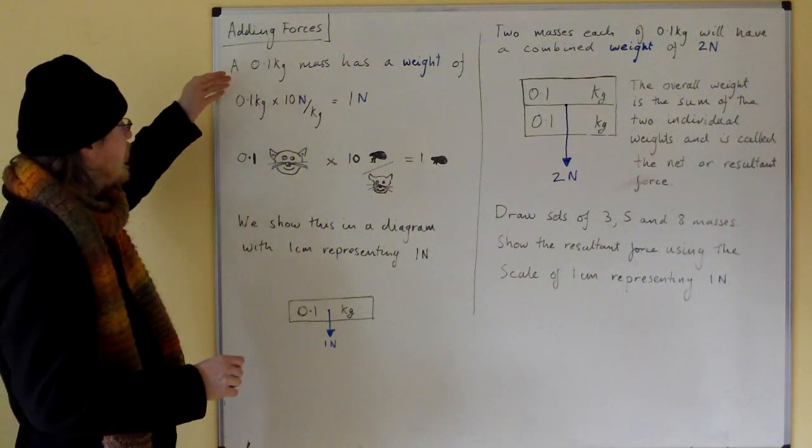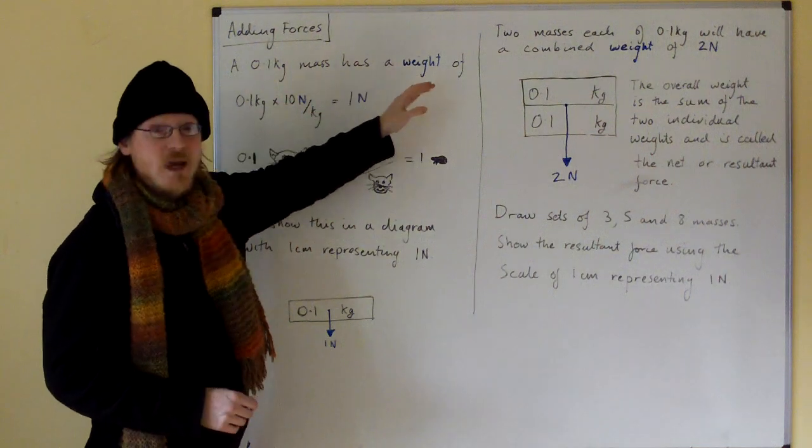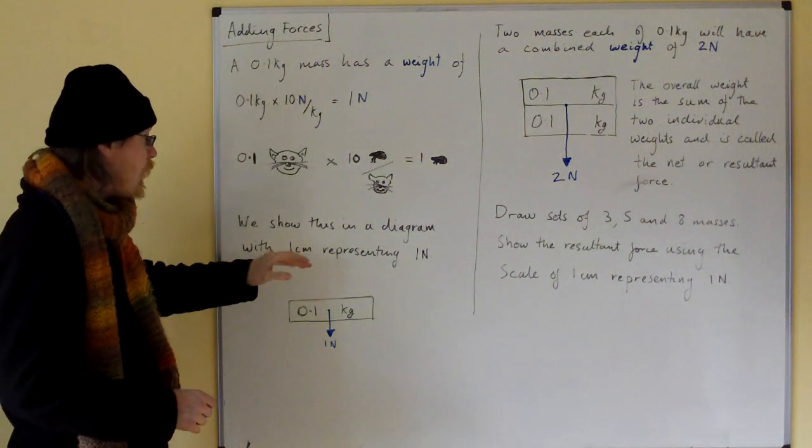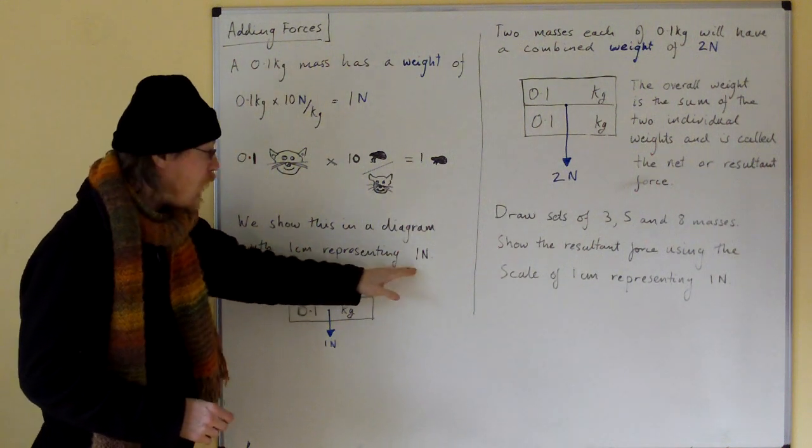We show this situation of a 0.1 kilogram mass having a weight of one newton in a diagram like this, okay? In a diagram with one centimetre representing one newton.